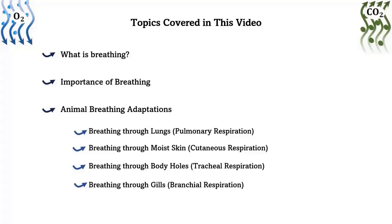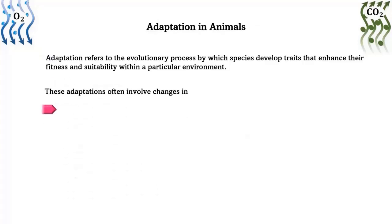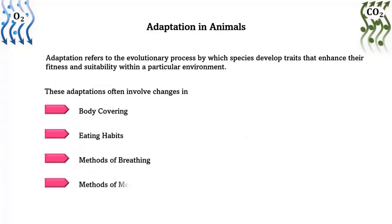breathing through body holes, and breathing through gills. Adaptation in animals: adaptation refers to the evolutionary process by which species develop traits that enhance their fitness and suitability within a particular environment. This process occurs over generations as advantageous traits are passed down through genetic inheritance. Adaptation can be structural, physiological, or behavioral, and they help organisms explore available resources,